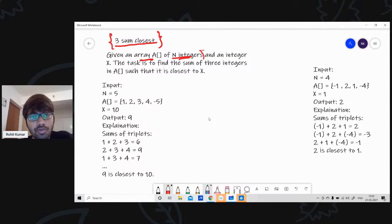Fine, so the question says threesome closest. Let's try to understand what do we mean by the question. Given an array of n integers and an integer x, the task is to find the sum of 3 integers in the given array such that it is closest to x. So the question is pretty simple. Basically, we need to do triplet sums and find out the most closest sum to x.